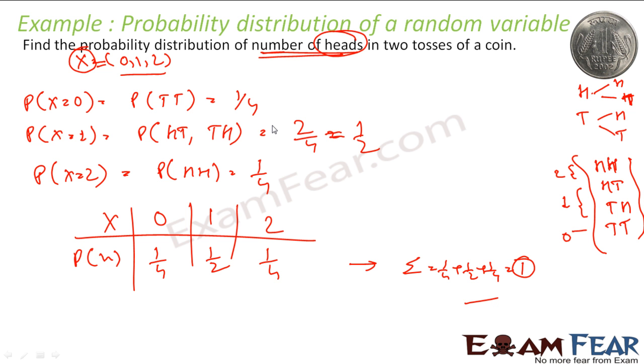So you are looking for the random variable: number of heads. We saw that the number of heads can be zero, one, or two, so we found x equal to 0, x equal to 1, x equal to 2.